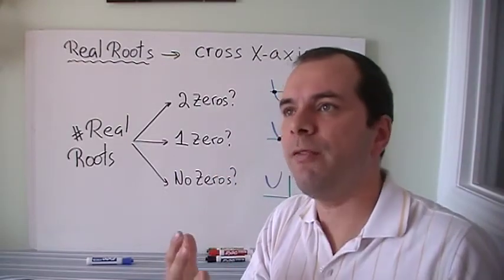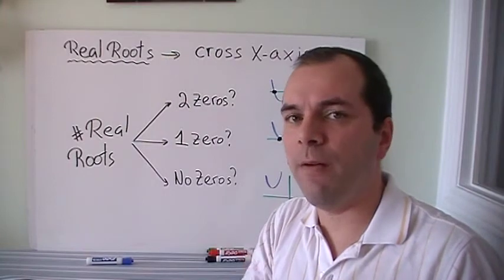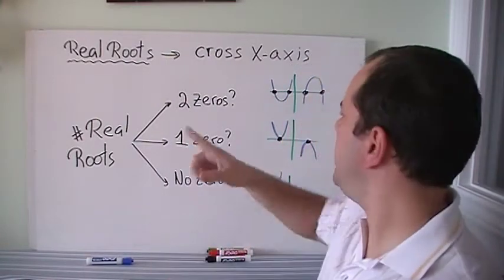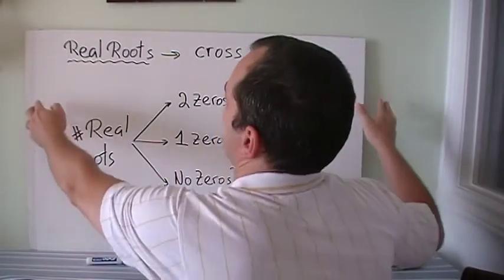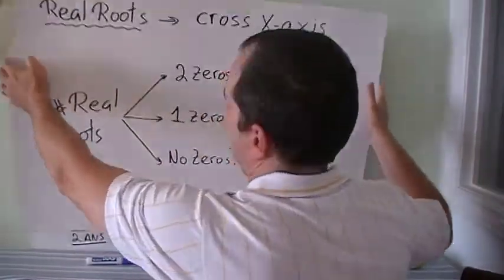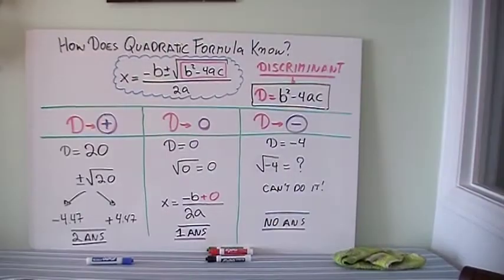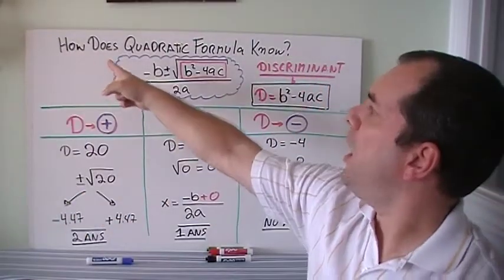So here's the question: How does quadratic formula, because quadratic formula finds the zeros, correct? So how does it know if it needs to give us two answers, one answer, or no answers? Well, that's the question we can answer right here.